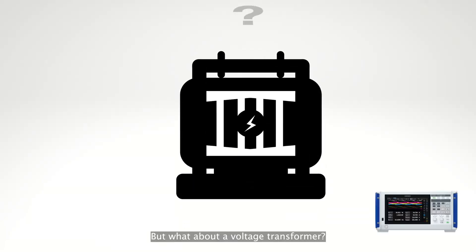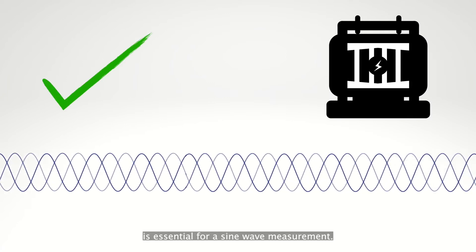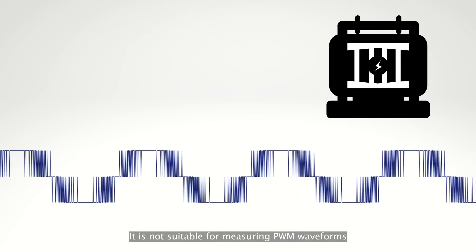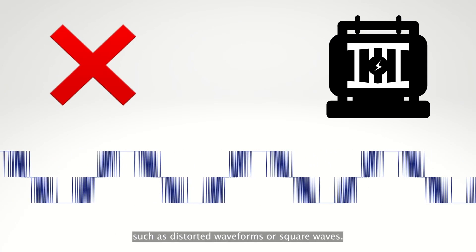But what about a voltage transformer? A voltage transformer, or VT, is essential for a sine wave measurement. It is not suitable for measuring PWM waveforms such as distorted waveforms or square waves.